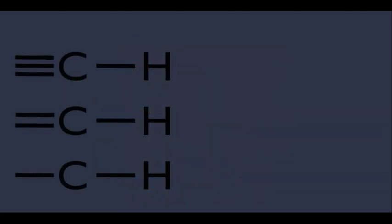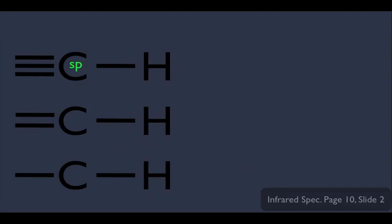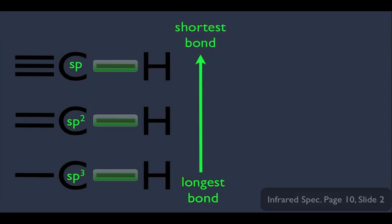Let's compare three CH bonds where the carbons have different hybridizations. A triply bonded carbon is SP hybridized, a doubly bonded carbon is SP2 hybridized, and a regular alkane carbon is SP3 hybridized. If you measure the lengths of these CH bonds, the SP3 hybridized carbon has the longest CH bond and the SP hybridized carbon has the shortest.